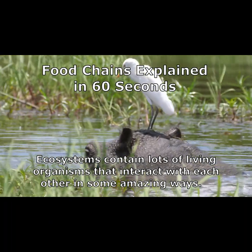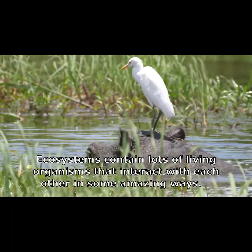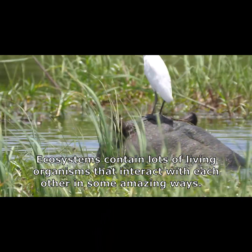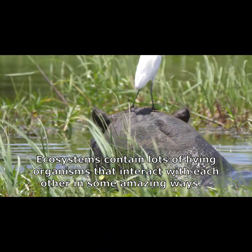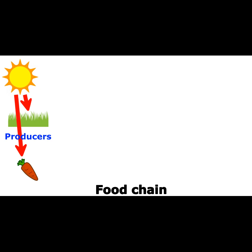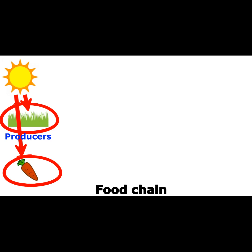Ecosystems contain lots of living organisms that interact with each other in some amazing ways. Since plants can capture this energy and convert it into their own food, they are known as producers. As a result, the first link of any food chain begins with a plant.